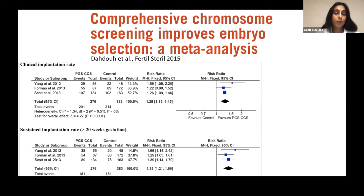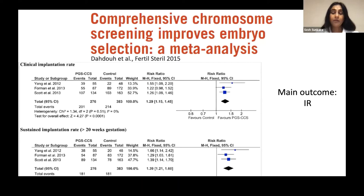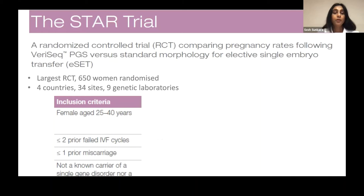Following these randomized controlled trials — excluding the 2012 ASRM abstract not published in full text — all full-text papers were put into a systematic review and meta-analysis published in Fertility and Sterility. The main outcome was implantation rate, and they found that second generation PGS significantly improves the implantation rate.